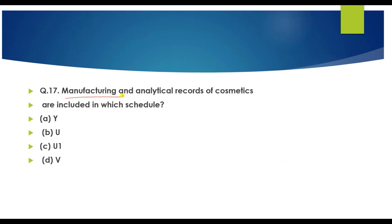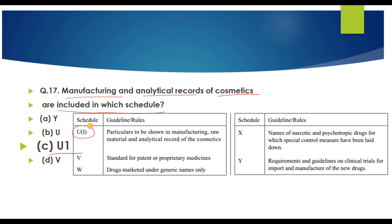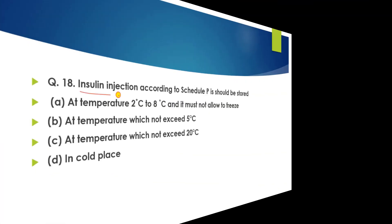Question number 17: Manufacturing and analytical records of cosmetics are included in which schedule? The answer is Schedule U-1. Schedule U-1 specifies particulars to be shown in manufacturing raw materials and analytical records of cosmetics.